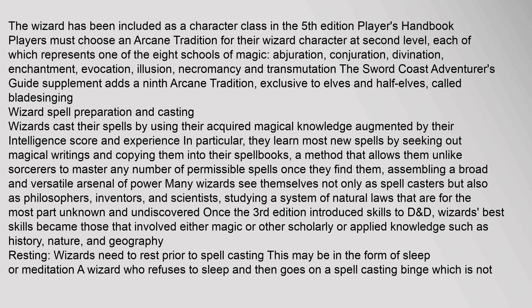The wizard has been included as a character class in the fifth edition Player's Handbook. Players must choose an arcane tradition for their wizard character at second level, each of which represents one of the eight schools of magic: abjuration, conjuration, divination, enchantment, evocation, illusion, necromancy, and transmutation. The Sword Coast Adventurer's Guide supplement adds a ninth arcane tradition, exclusive to elves and half-elves, called bladesinging.